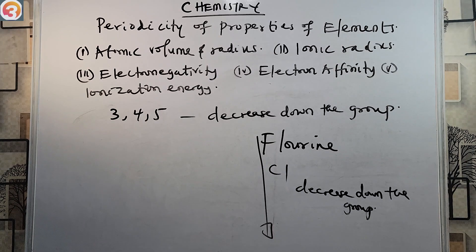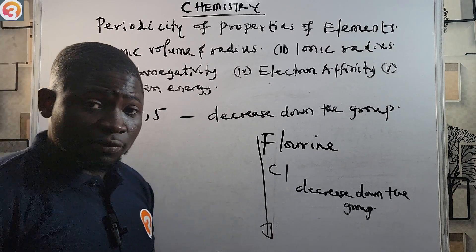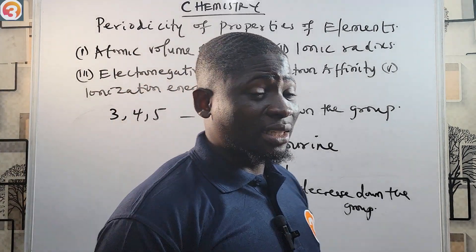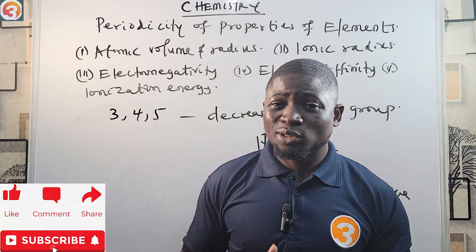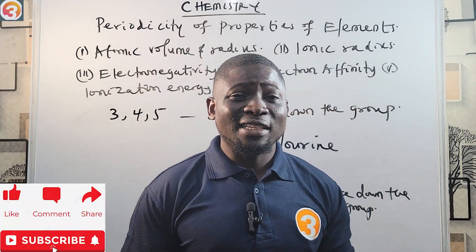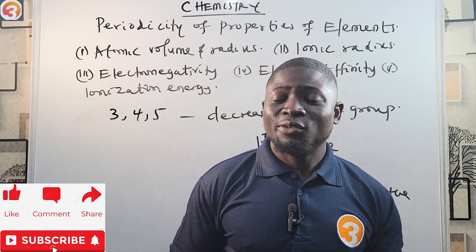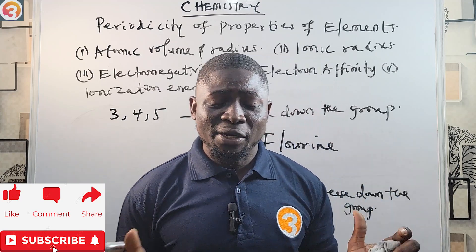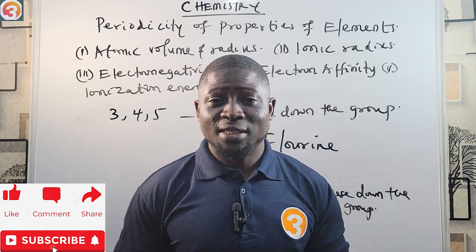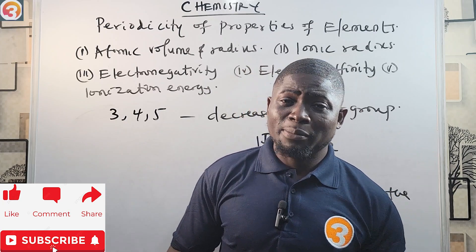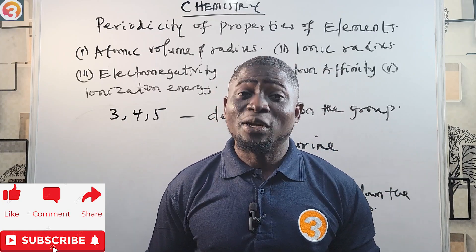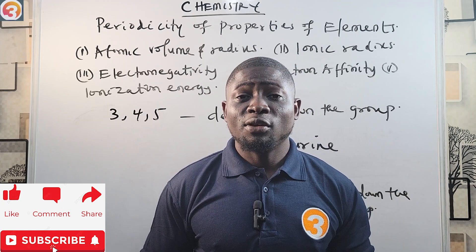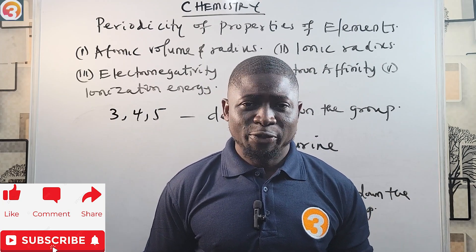So once you know fluorine is the most electronegative element, you know the variation of electronegativity — down the group it decreases, across the period it increases. I'm sure you've gained a lot from this. Exam questions are set on this, so once you know what we've covered today, you are sure to get marks on periodicity of properties of elements. See you in the next episode.